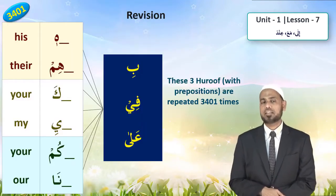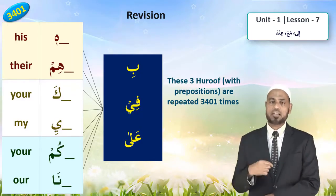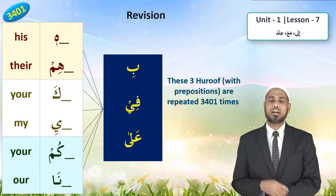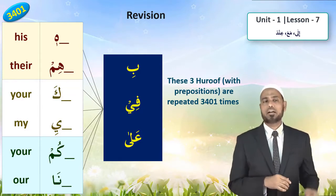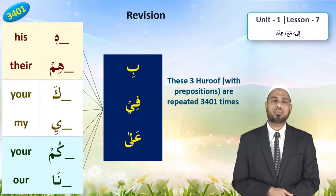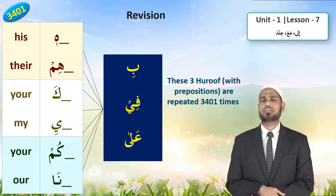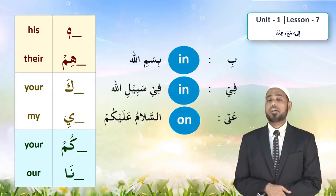These along with the pronouns — he, him, ka, i, kum, na, and ha — occur in the Quran 3,400 times. Mashallah, 3,401!